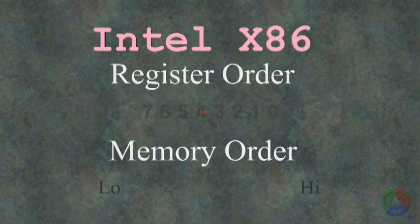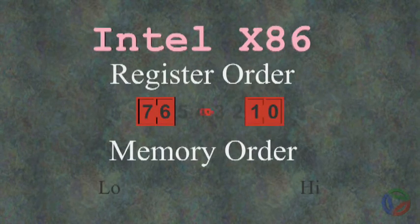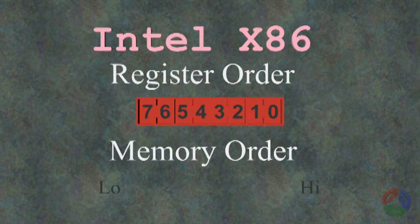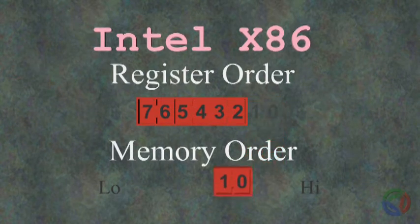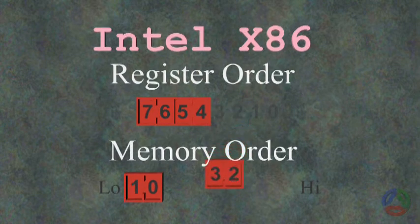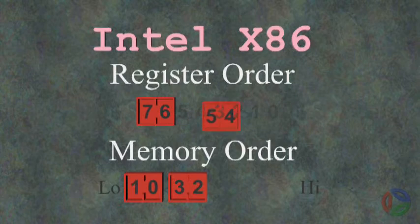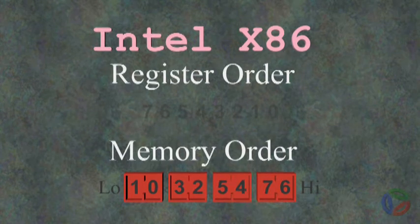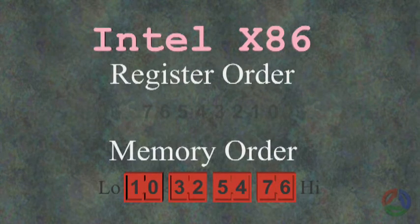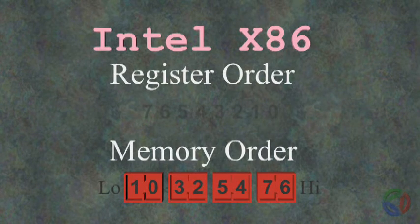Little Endian architectures, such as the Intel x86, store multibyte values low order first. Here we see that the 32-bit register value 0x76543210 is stored to memory in the sequence 0x10325476. This looks backwards from the way we view it as a 32-bit register value because our method for representing numbers lists high order digits first. But notice that the two hex digits within each byte still appear to be in their correct orders.